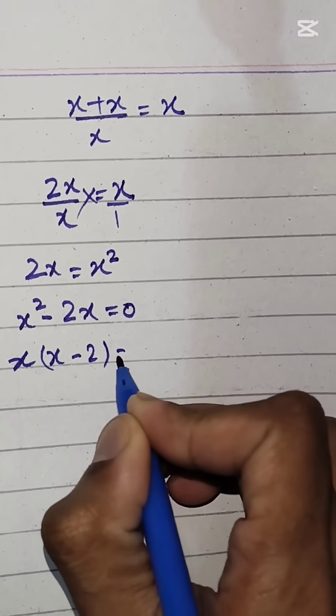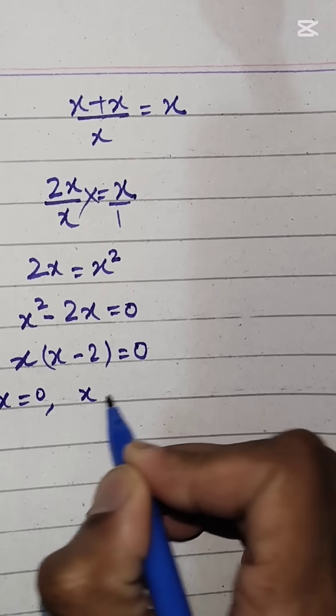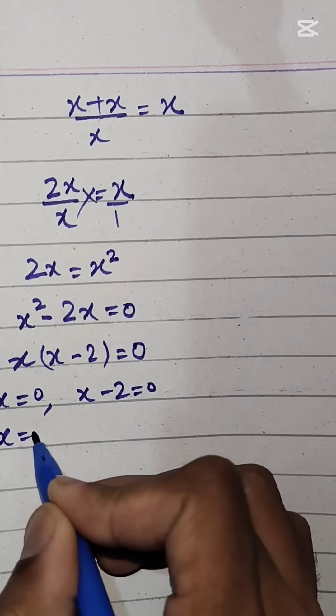Either x equals 0 or x minus 2 equals 0, so we have two values of x: 0 and 2.